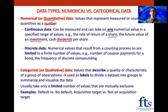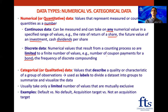If we compare this to discrete data, these are numerical values that result from counting processes and are limited to a finite number of values. For example, the number of coupon payments for a bond. If a company wants to borrow money, one thing they can do is issue a bond, borrowing money from investors. They have to pay the money back, and they also need to pay interest on what they borrow. This interest we call coupons.